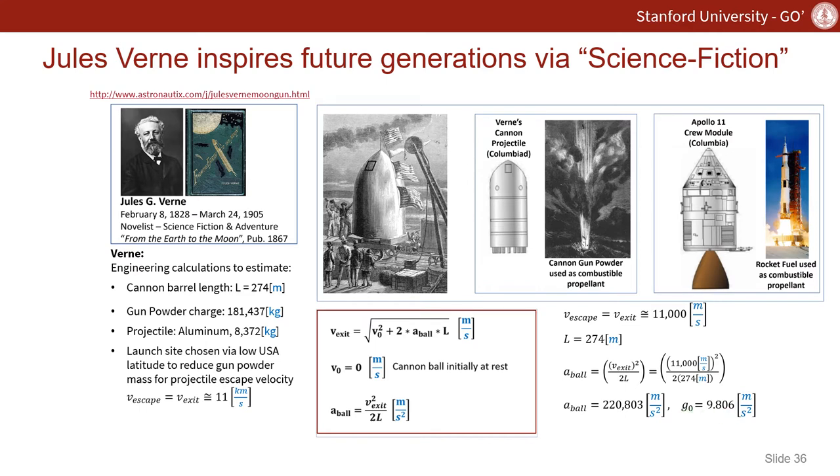If we take 1g and divide that into that acceleration, what we end up with is a factor of 22,517 times larger than gravity. This is what the astronauts inside the Columbia would have had to have experienced as a peak acceleration on their way to the moon.